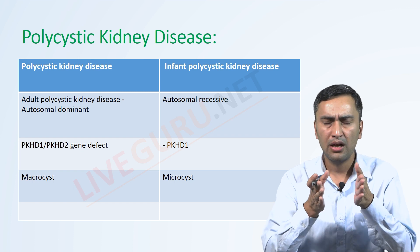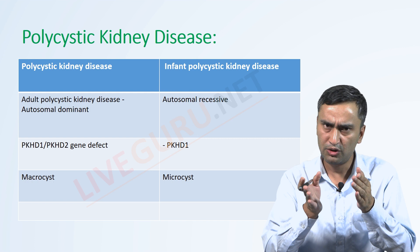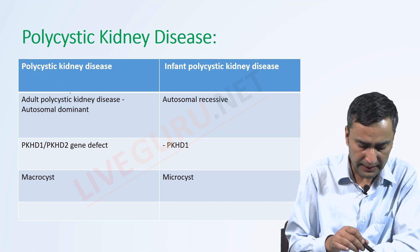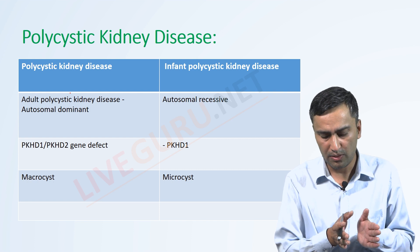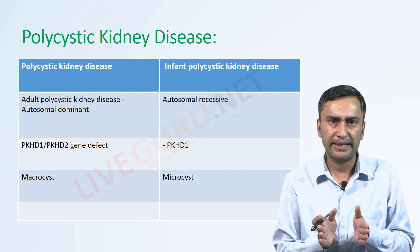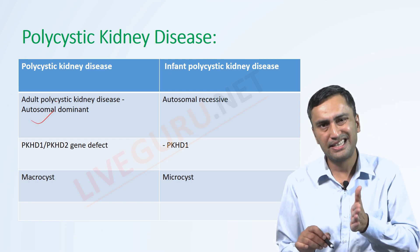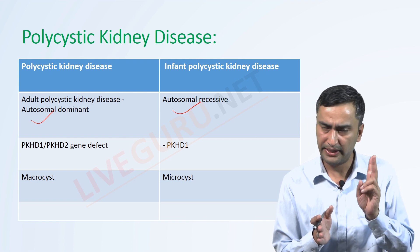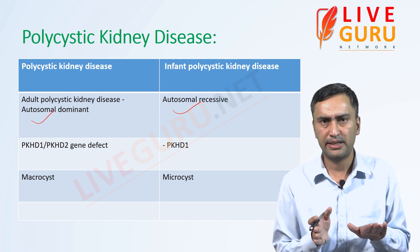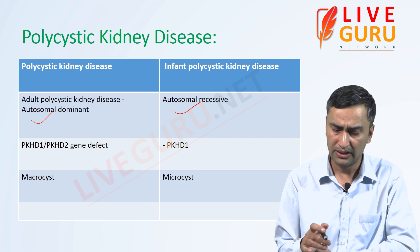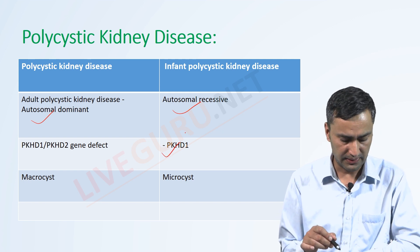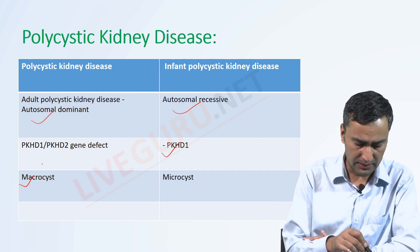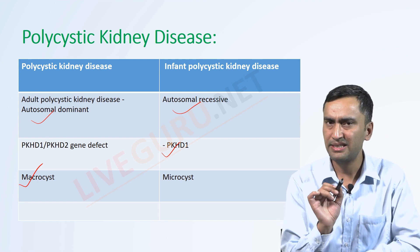Focusing on polycystic kidney disease: it can be autosomal dominant (adult type) or autosomal recessive (infantile type). If the clinical vignette gives the adult type, it is autosomal dominant. If it is the infantile type, it is autosomal recessive. The genes involved: in the adult type, either PKD1 or PKD2 gene can be defective. In the infantile type, the PKHD1 gene is defective. By the type of cyst we can differentiate: adult type has macro cysts, infantile type has micro cysts.